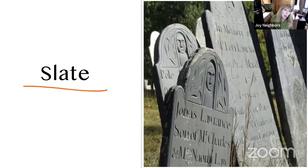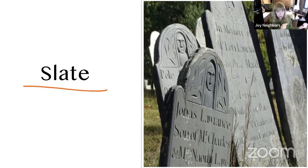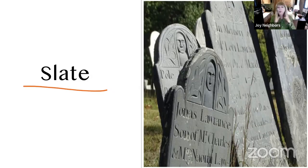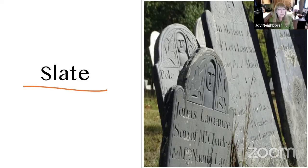Slate stones were popular from the 1600s into the 1900s, found mainly in the eastern United States. Boston, Massachusetts is where most early American markers were produced. Slate can withstand the freeze-thaw effect of physical weathering and doesn't appear to be too affected by acid rain. However, the stone is porous, which makes it subject to delamination — literally the separating of that stone into sheets. We do still use it today, but sparingly.